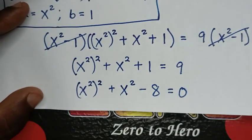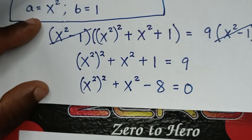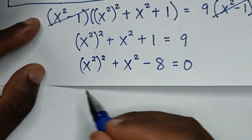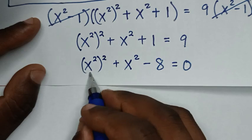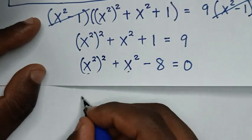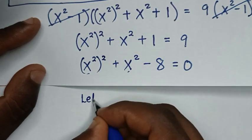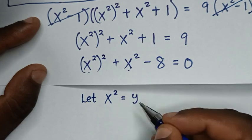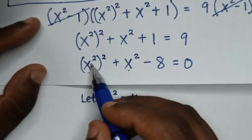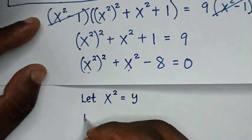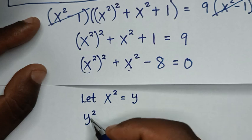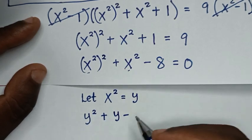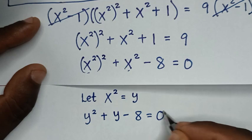Then, in the next step, from here, into this equation, x square is common. So, we will let x square is equal to y. So, into the equation it will be y square. So, y square plus y, then minus 8 is equal to 0.